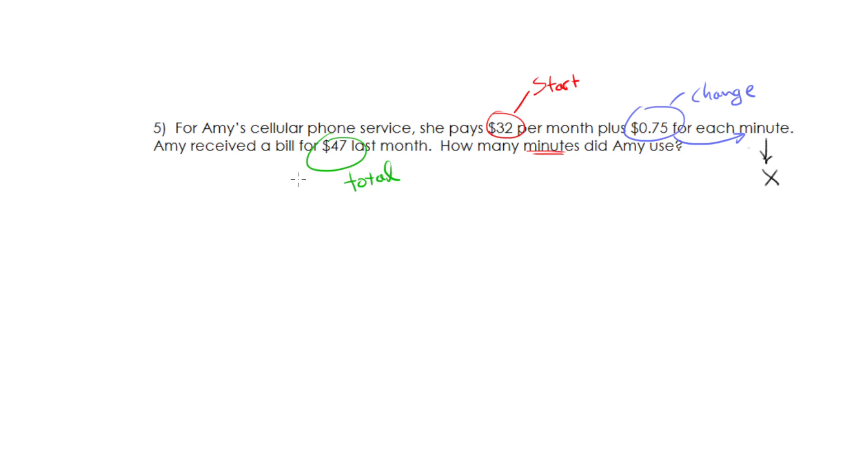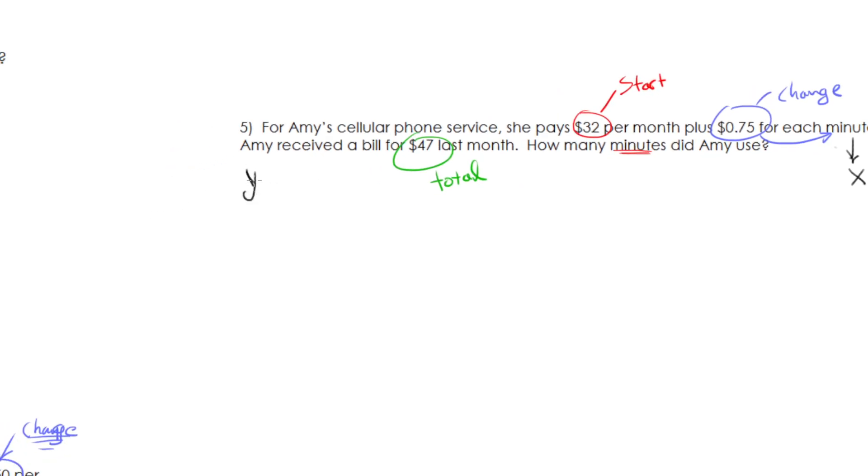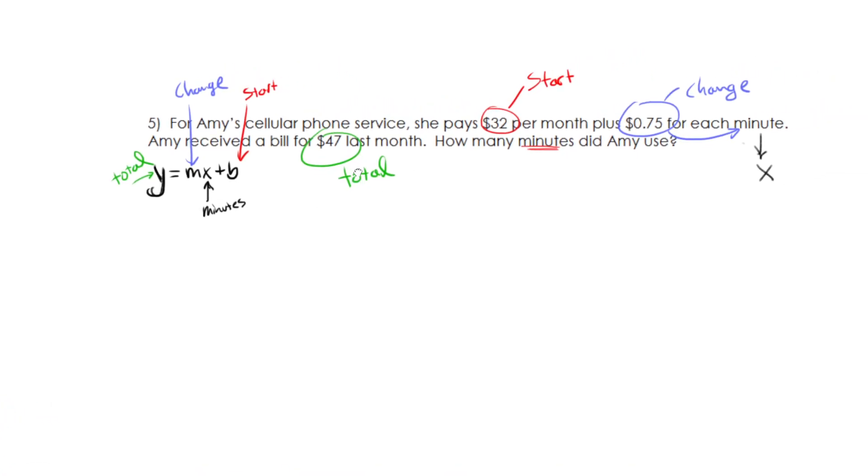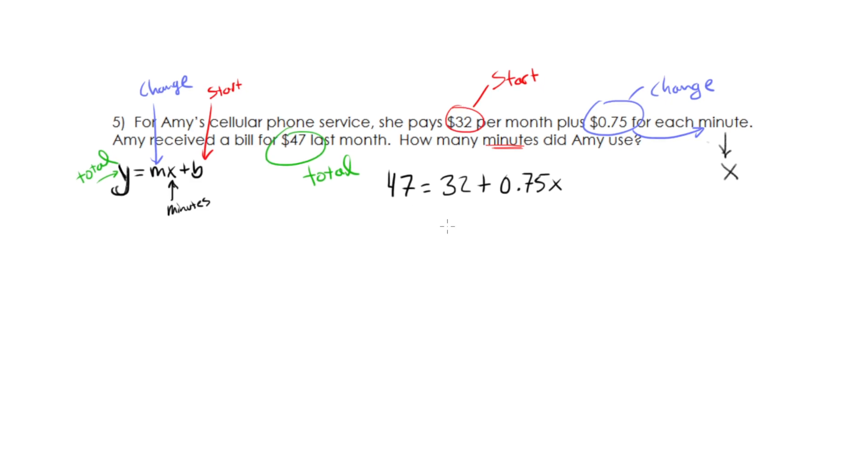I'm going to have my total. Well, the equation is going to match the y equals mx plus b where the m is the change and the b is the start. And this guy over here is the total. And then this is my input or in this case, my minutes. Alright. So the equation, when I plug it all in, will give me 47 equals 32 plus 0.75x. Moving on. We'll solve that later.